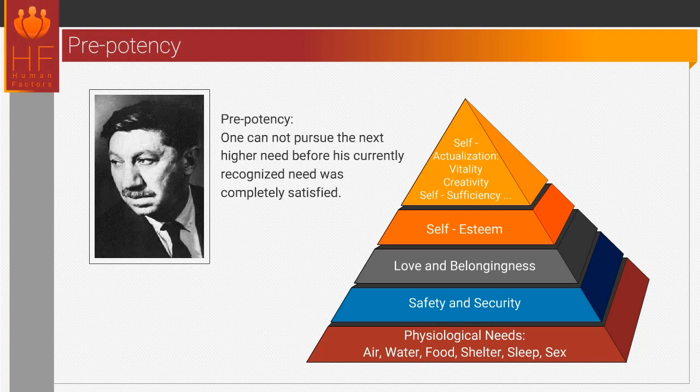The essence of Maslow's hierarchy is the notion of pre-potency, where people will not be motivated by any higher-level needs until the lower-level ones have been satisfied.